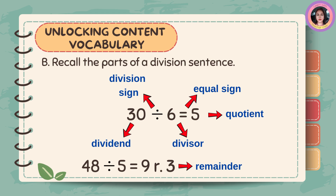Let us recall the parts of a division sentence. In 30 divided by 6 equals 5, we have the division sign, equals sign, and 30 is the dividend, 6 is the divisor, and 5 is the quotient. In 48 divided by 5 equals 9 remainder 3, 3 is the remainder.